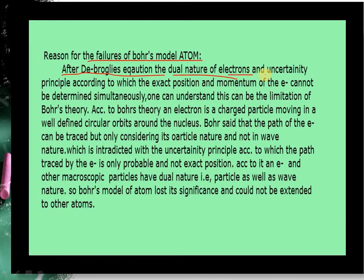Electrons are microscopic. According to de-Broglie, electrons are having dual nature. Uncertainty principle: according to the uncertainty principle, exact position and momentum of the electron cannot be determined simultaneously. We can find a microscopic object which we have told in the last lecture.